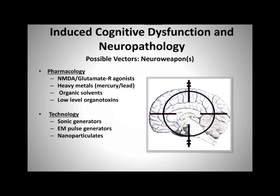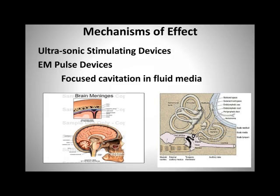What about technologies that would induce these otopathologic effects — could they also affect the central nervous system? Yes, they could. There is, in fact, a literature suggesting that sonic generators, electromagnetic pulse generators, and even nanoparticulates could be vectored through the ear, through the sinuses, through the eyes, and have centralized effects by virtue of harmonic frequencies that would disrupt the stabilization of structures and functions of the brain. The inner ear is anatomically nestled next to the intimate lining of the brain and actually communicates with the fluid medium of the brain.